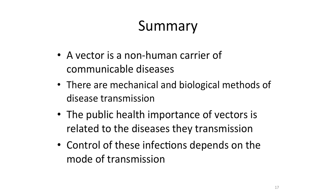To summarize, this session has covered the introduction of what a vector is — a non-human carrier of disease, which can be an arthropod, a snail, or any other non-human organism. There are different mechanisms of transmission, including mechanical and biological. The public health importance of vectors is related to the diseases they transmit, such as malaria, dengue, and filariasis. The control of these infections depends on modes of transmission — whether mechanical, biological, zoonotic, or anthroponotic — as those modes determine how infections can be controlled. Thank you very much, this is the end of the session for today.